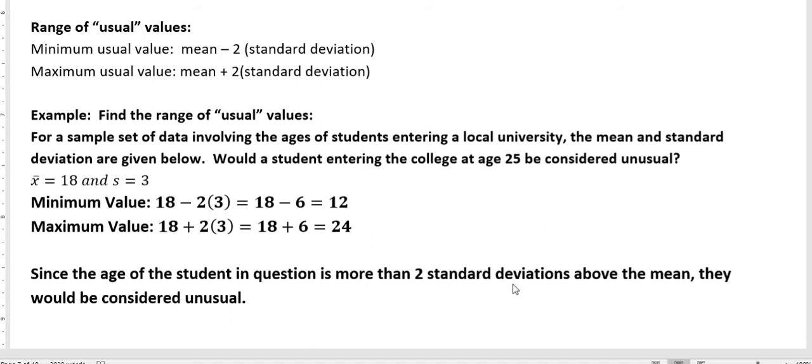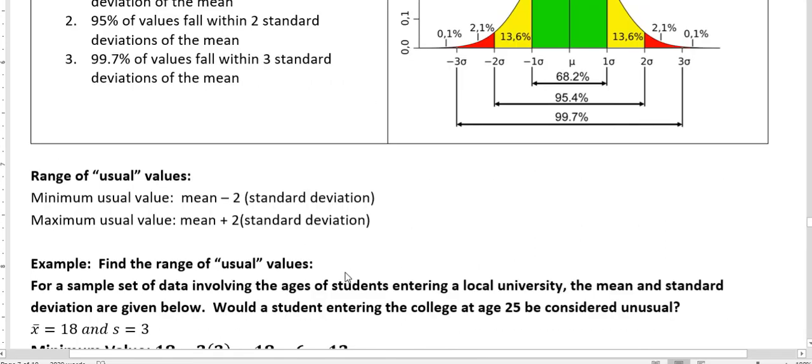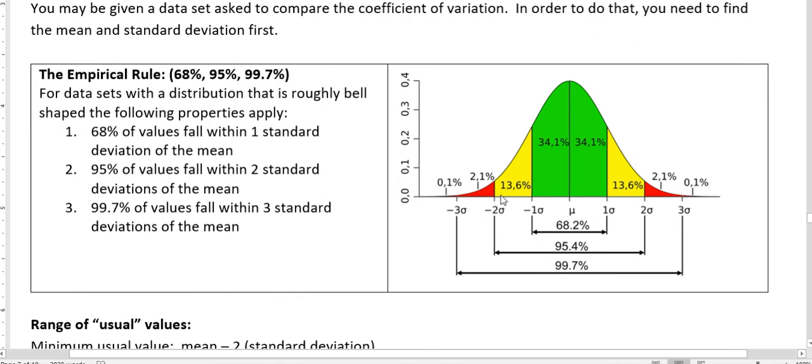So to find the range of usual values, you find two times the standard deviation, subtract that from the mean and add that to the mean. And that's going to give you those acceptable ranges. And remember that the acceptable ranges mean two down and two up means 95 percent, or 95.4 percent, of those values are going to fall within that range.